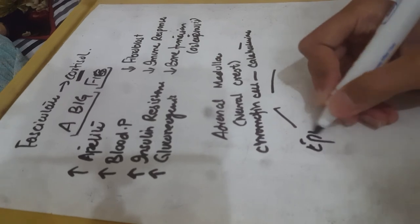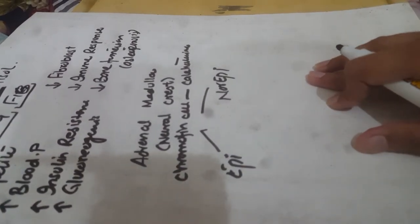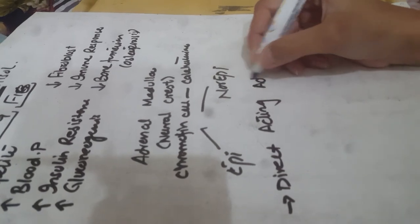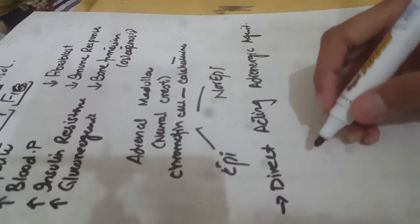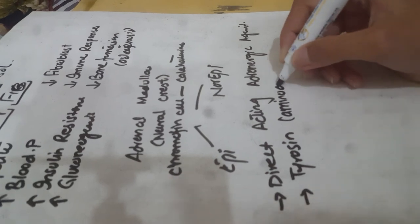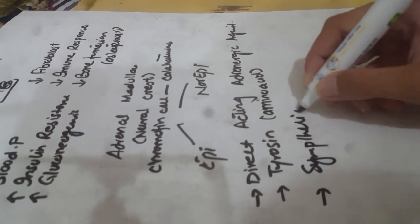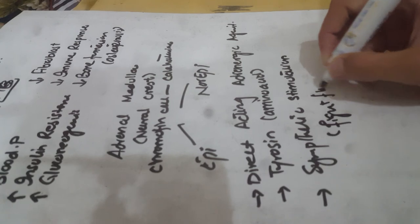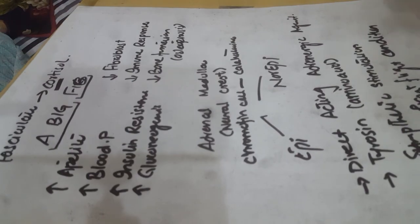The catecholamines secreted are epinephrine and norepinephrine. These are adrenergic, direct-acting agonists. They are synthesized from tyrosine, an amino acid derivative. They help in sympathetic stimulation during the fight-or-flight response. This concludes the discussion of the adrenal gland.